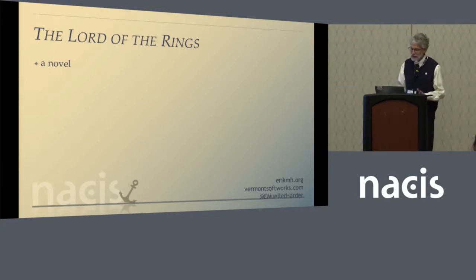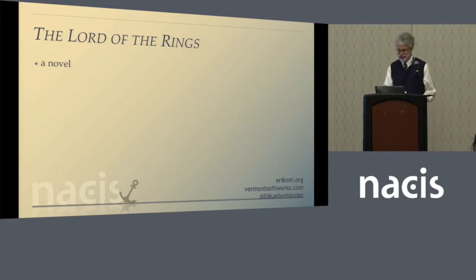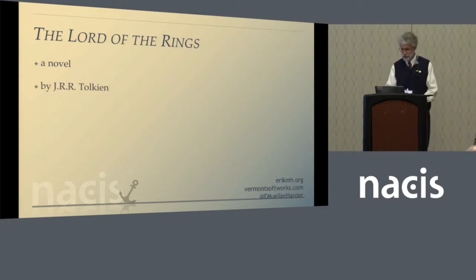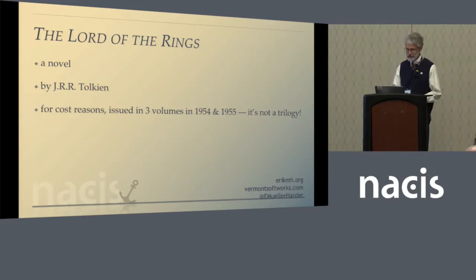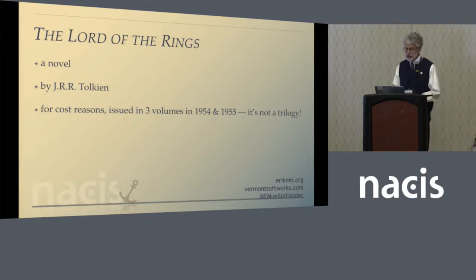Just to clear things up, I'm not talking about any films or role-playing games or upcoming television series. Within the context of this paper, The Lord of the Rings is simply a novel written by J.R.R. Tolkien, whom I'll refer to from here on out simply as Tolkien because I find J.R.R. hard to say. The book came out in three volumes in 1954 and 1955 because, given Britain's post-war economy and paper shortage, the publisher wasn't able to justify committing the resources to such a chancy enterprise all at once.